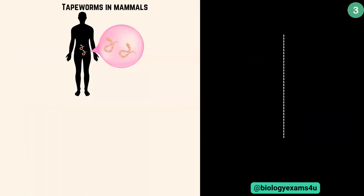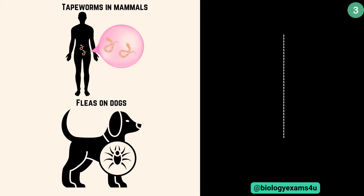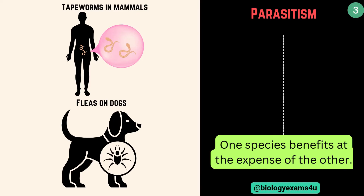Now the third type of interaction. Tapeworms in mammals — tapeworms live in the intestines of hosts, absorbing nutrients. Fleas on dogs — these fleas feed on the blood of dogs, causing discomfort and potential health issues. This type of interaction is called parasitism, where one species benefits at the expense of the other.